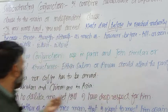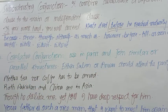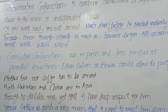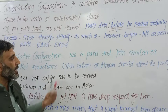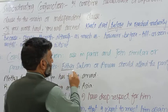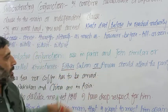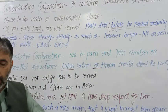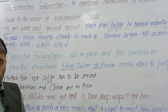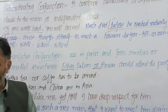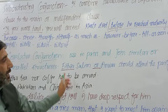Correlative conjunction similar اور parallel structure کو ایک دوسرے سے ملا لیتی ہے. جیسے: 'Either Salim or Anwar should attend the party' — یعنی یا تو Salim جائے یا Anwar جائے، لیکن کوئی نہ کوئی تو جائے. So 'either/or' یہ correlative conjunction ہے.